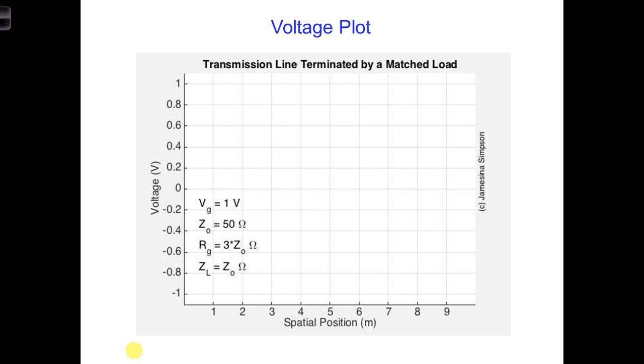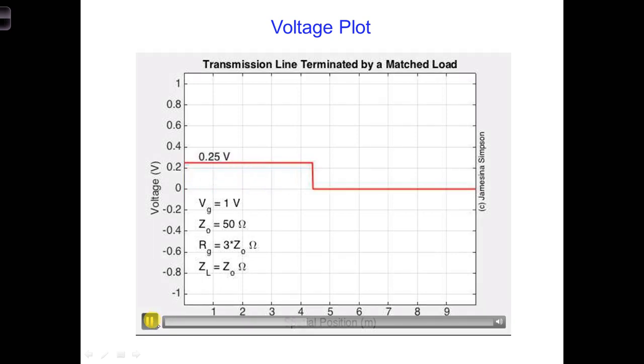If you couldn't answer this before, now how do you think we get 0.25 volts for the initial V1 plus wave traveling down this transmission line?